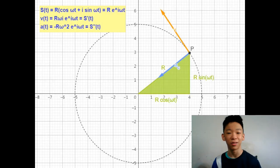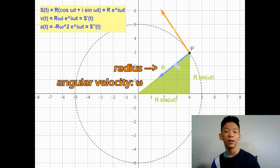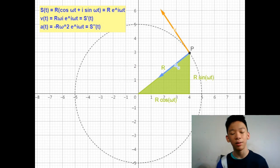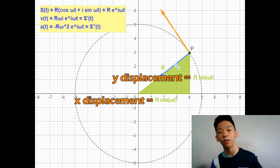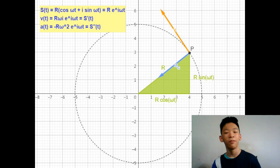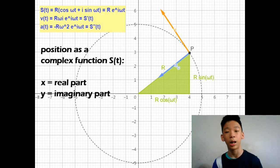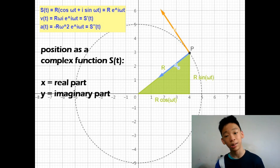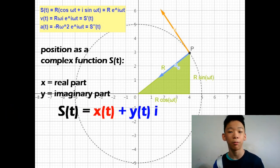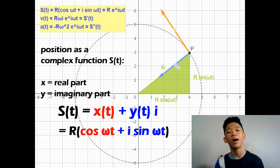Imagine that a particle is moving around the origin in a circle with a radius of r meters and angular velocity of omega radians per second. We can determine the x and y positions of the particle to be r cosine(omega t) and r sine(omega t) respectively. If we want to represent the position using a complex function, we let x(t) be the real part and y(t) be the imaginary part, so our position s(t) can be written as x plus yi, which equals r times (cosine omega t plus i sine omega t).